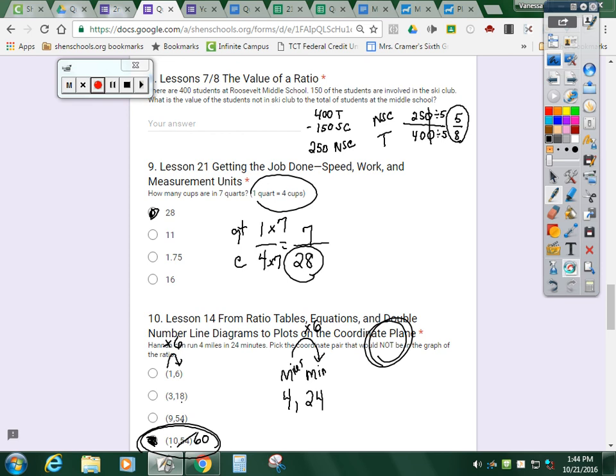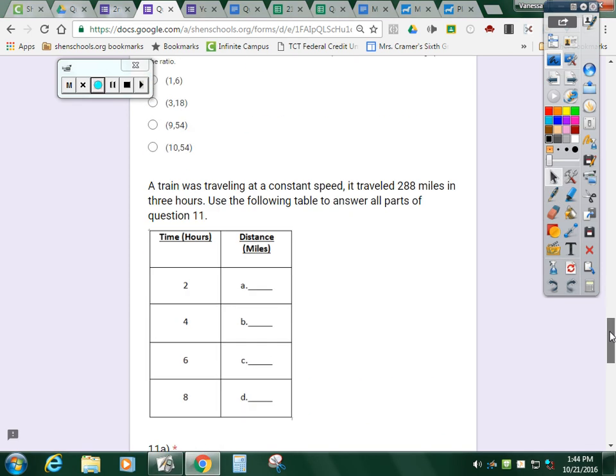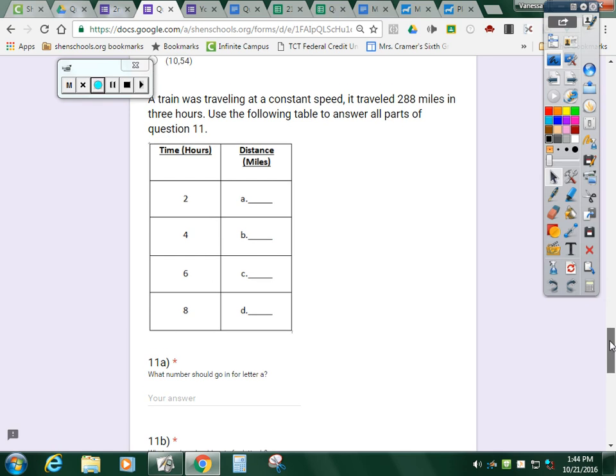Last one. A train was traveling at a constant speed. It travels 288 miles in three hours. So let me, miles, two hours. I'm going to scale it down to per one hour. Divide by three, divide by three. When you divide 288 by three on your calculator, you should get 96. Don't put 96 here. That is for one hour of travel.